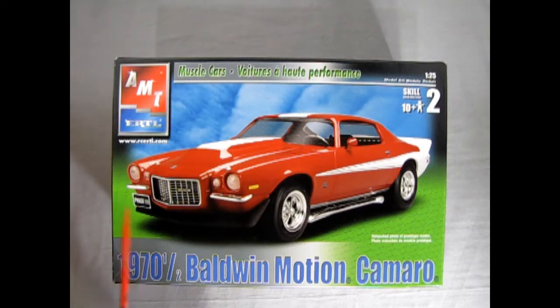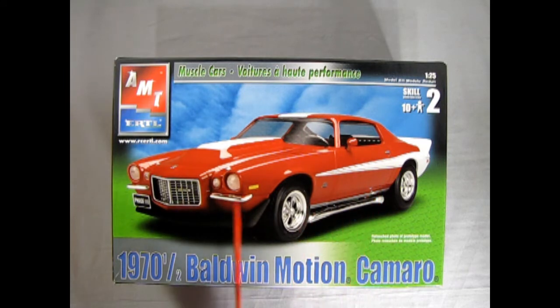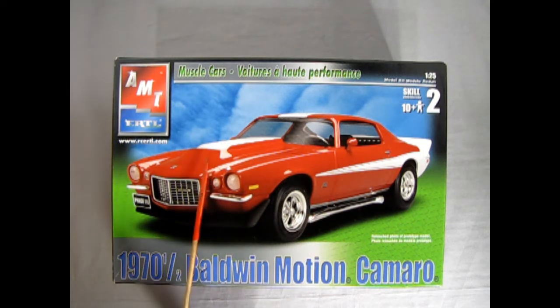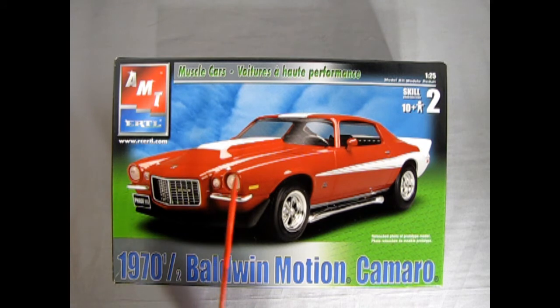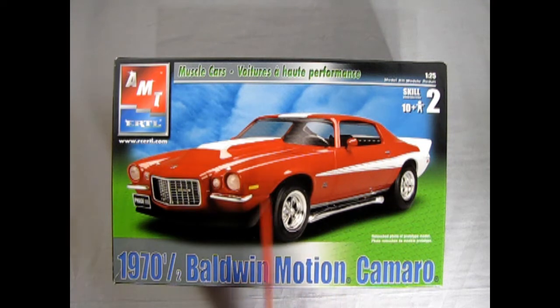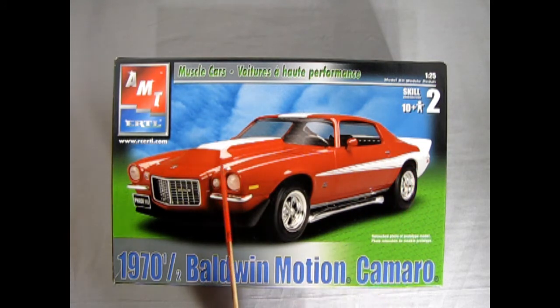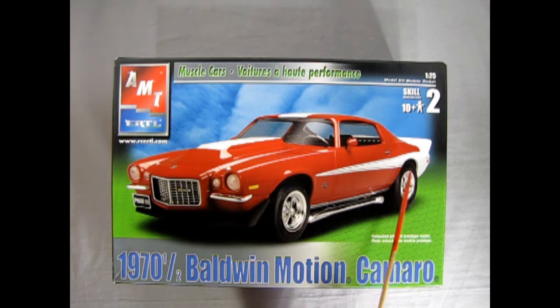Now one thing that is missing off that decal sheet as you would have noted. Are these white stripes that are on the Baldwin Motion Camaro. Which really set aside and make this car stand out. Now the sad part with RC Ertl or RC2. Is that they would often make a box and show you something on the box art. And when you open the kit it was sadly missing. Now I'm not sure if Round 2, the new AMT. Has this stripe on their current releases of this kit. Or if it's not included.